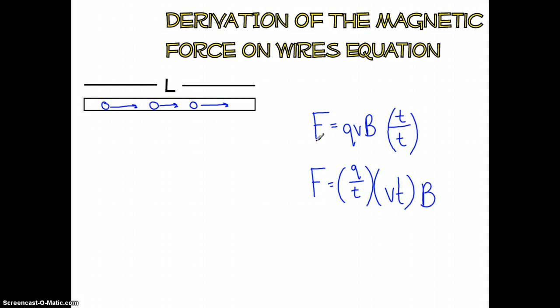The reason we did this is if you look, Q over T is the definition of current, so that's going to become I.